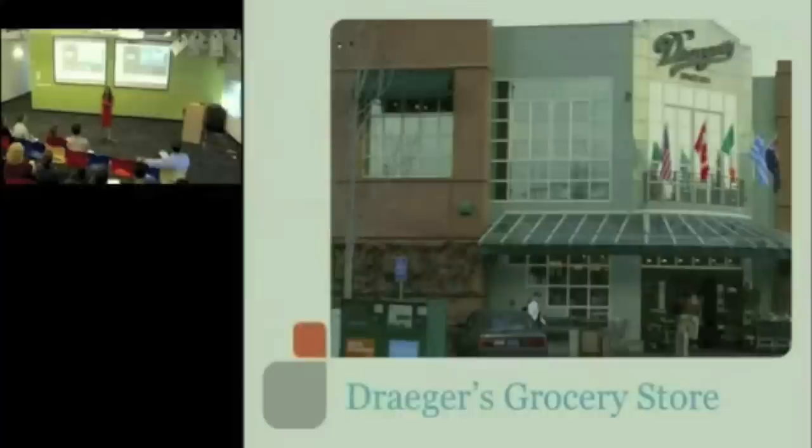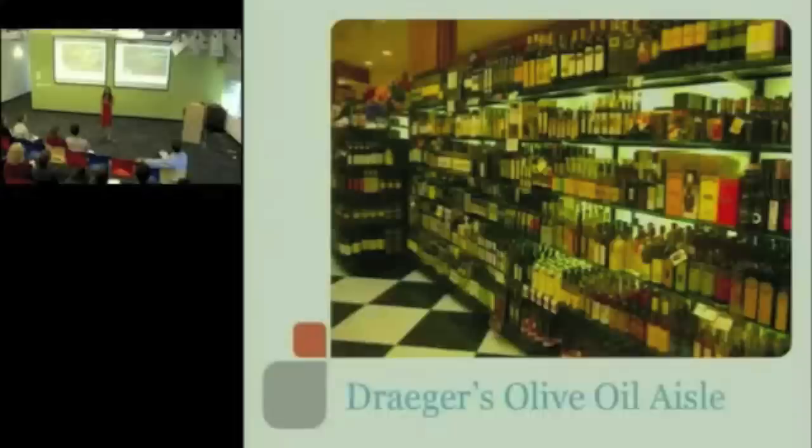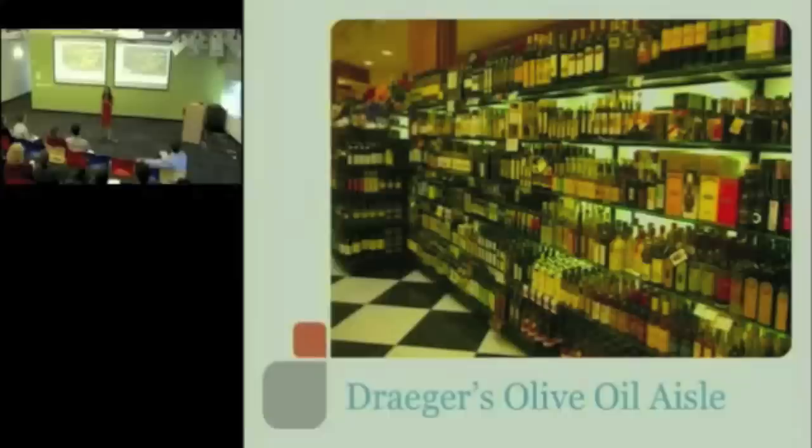You went there, there were 250 different kinds of mustards and vinegars and mayonnaises. Over 500 different kinds of fruits and vegetables. They even had 12 different kinds of bottled water. Of course, I noticed you guys had three different kinds in your Charlie's Cafe. Here is their olive oil aisle. They had 75 different kinds of extra virgin olive oil, including those that were in a locked case that came from 1,000-year-old olive trees.